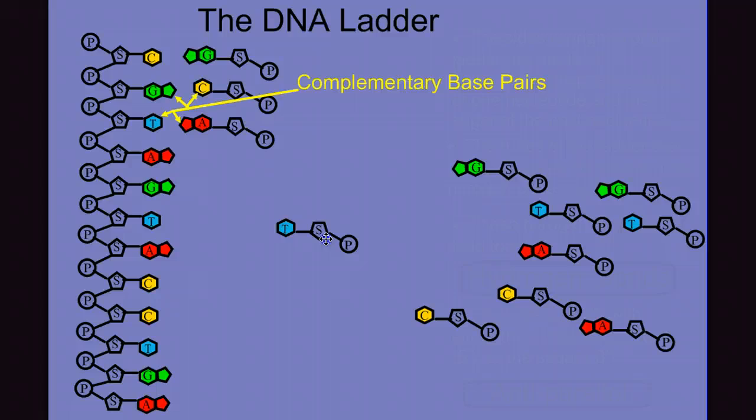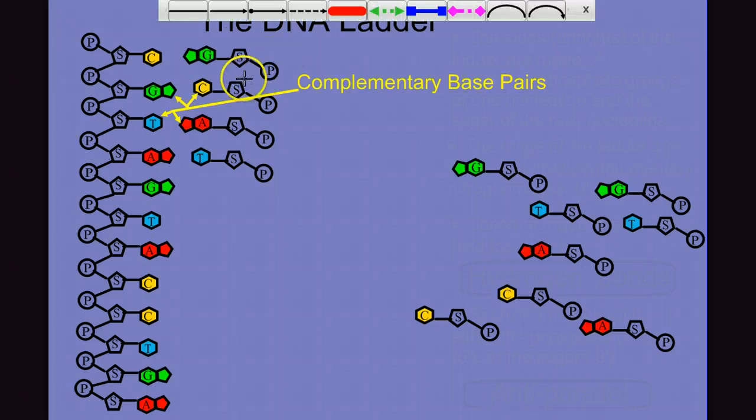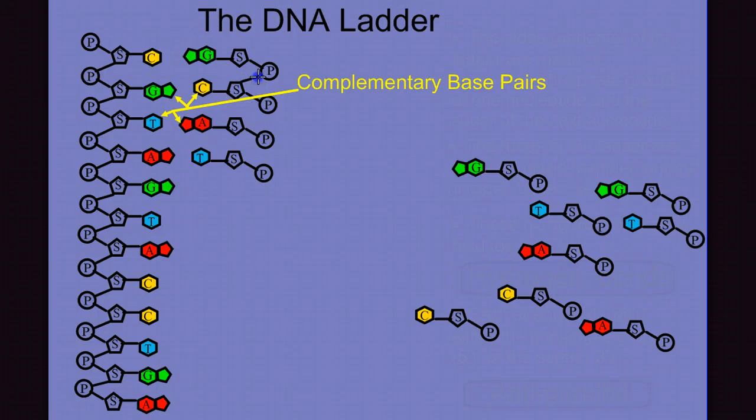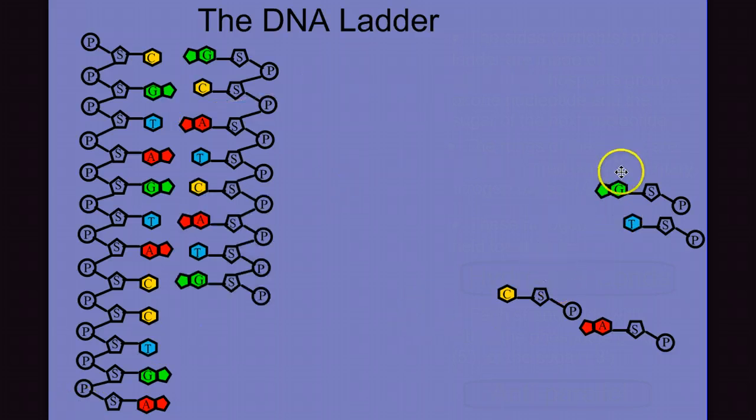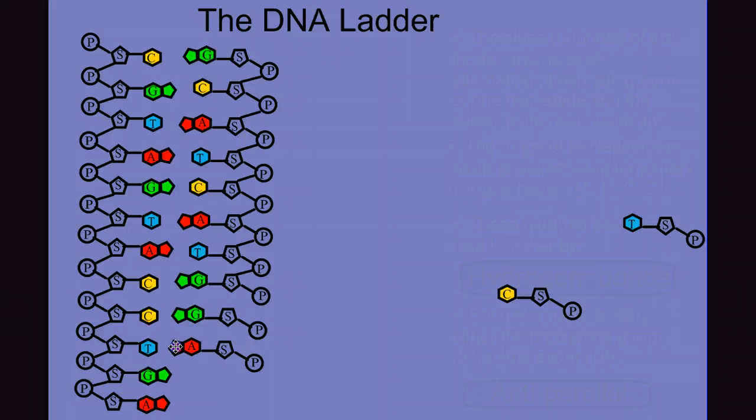Those are the complementary base pairs that Chargaff taught us. And as we continue to line up the complements across from each other, A's with T's and C's with G's, we can see that we can build the bond from the sugar of one to the phosphate of the next, just like we did on the first strand.